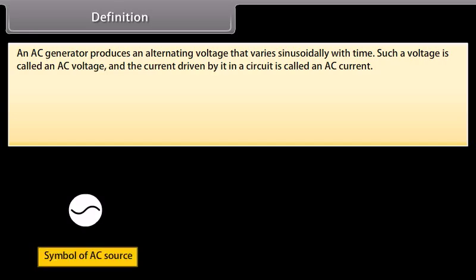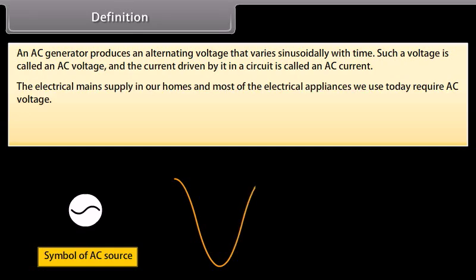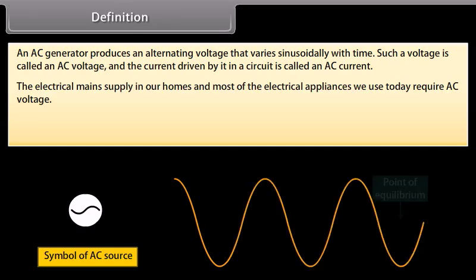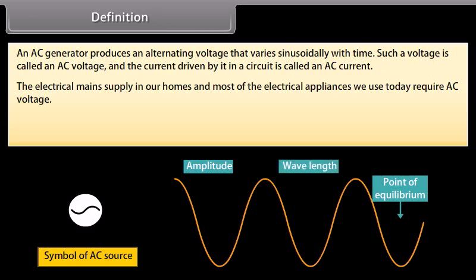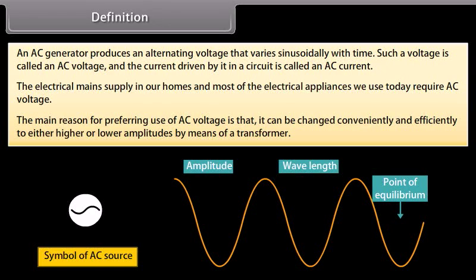Definition: An AC generator produces an alternating voltage that varies sinusoidally with time. Such a voltage is called an AC voltage, and the current driven by it in a circuit is called an AC current. The electrical mains supply in our homes and most electrical appliances we use today require AC voltage. The main reason for preferring AC voltage is that it can be changed conveniently and efficiently to higher or lower amplitudes by means of a transformer.